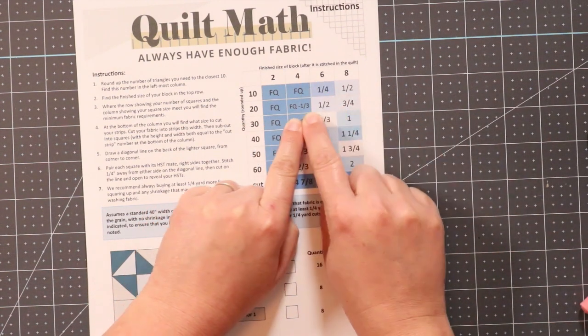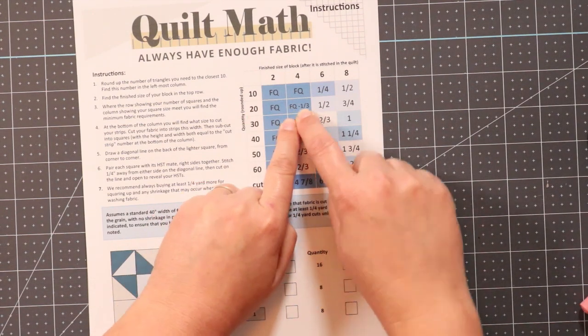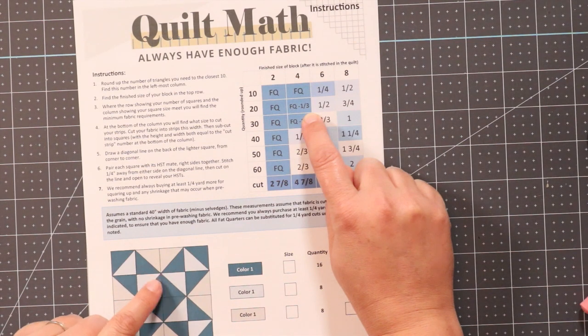16 rounds up to 20, so I need a fat quarter or a third of a yard if I'm cutting yardage in order to cut my 24 inch finished half square triangles for my quilt.